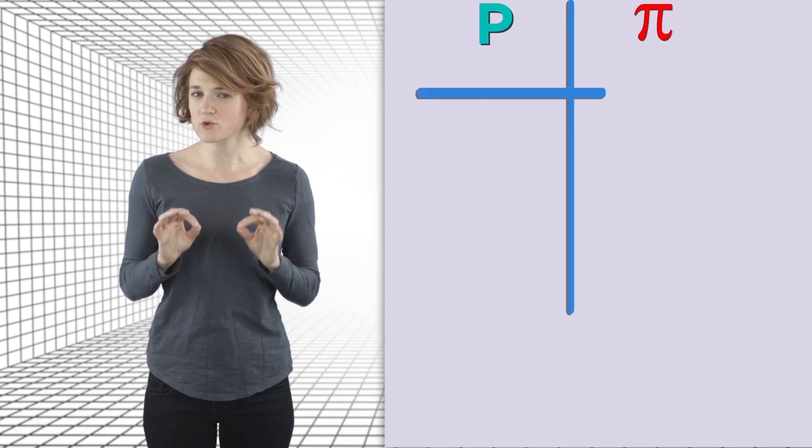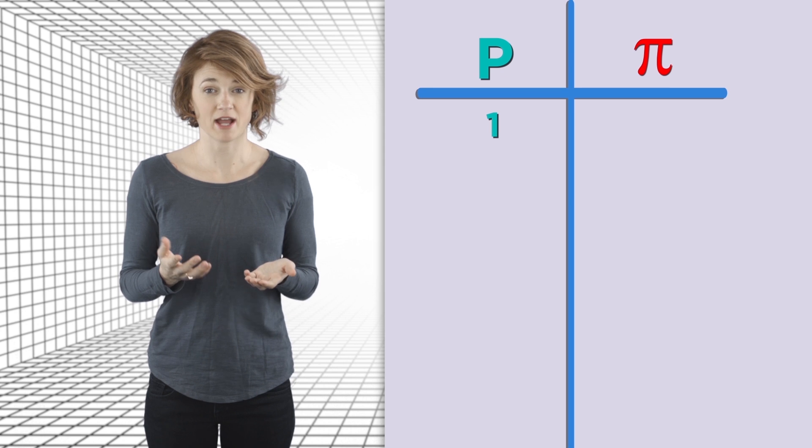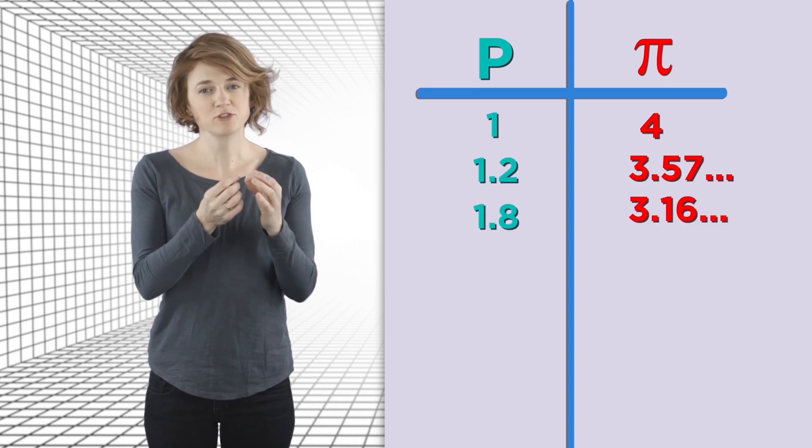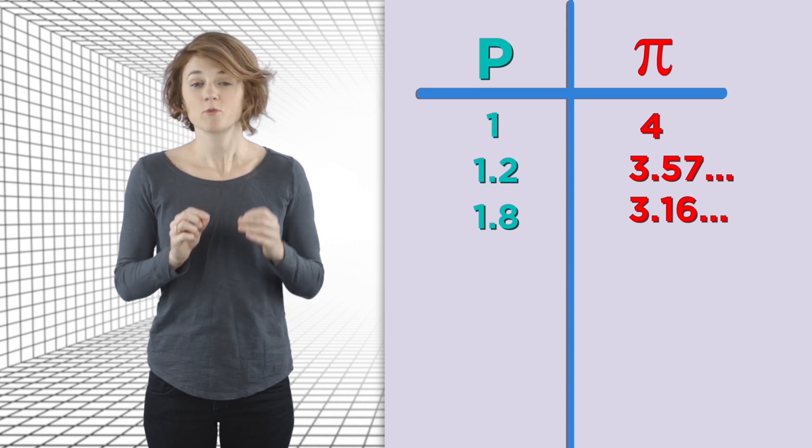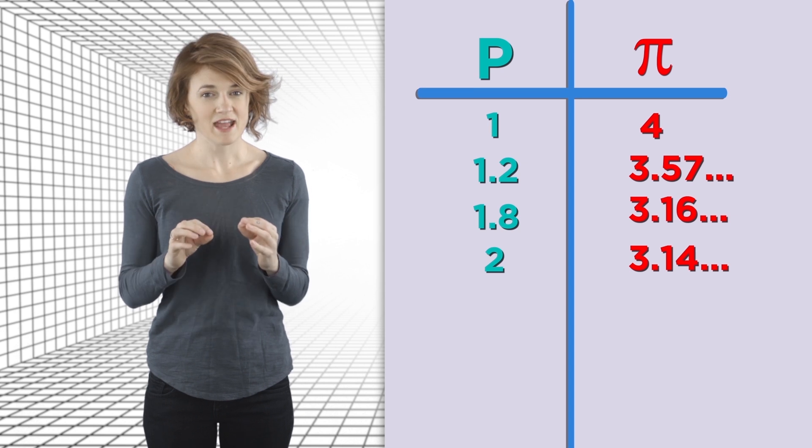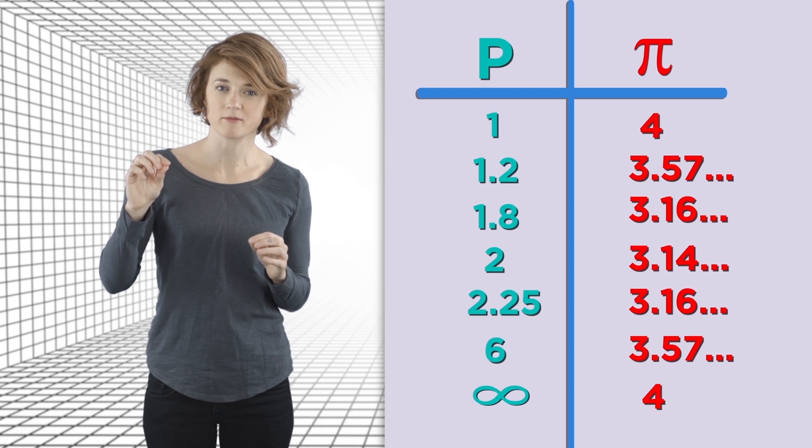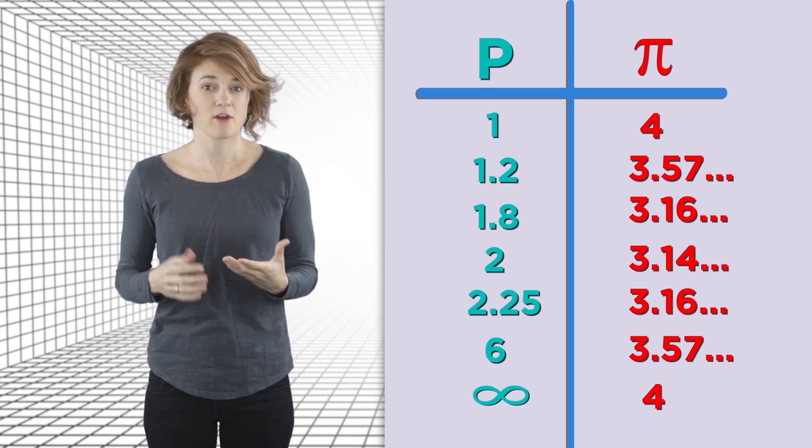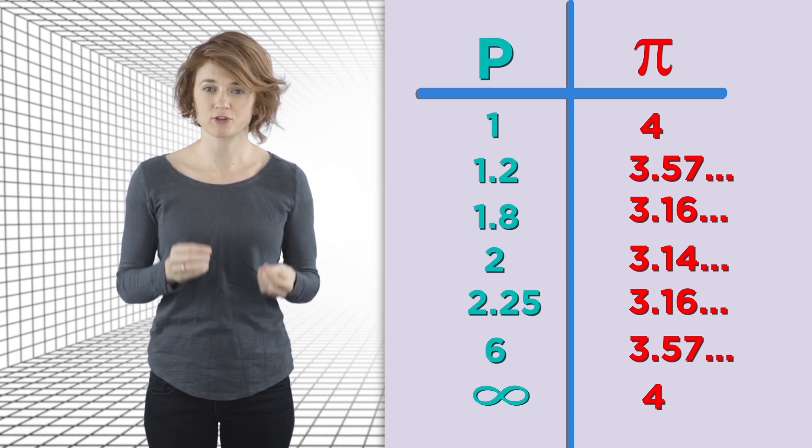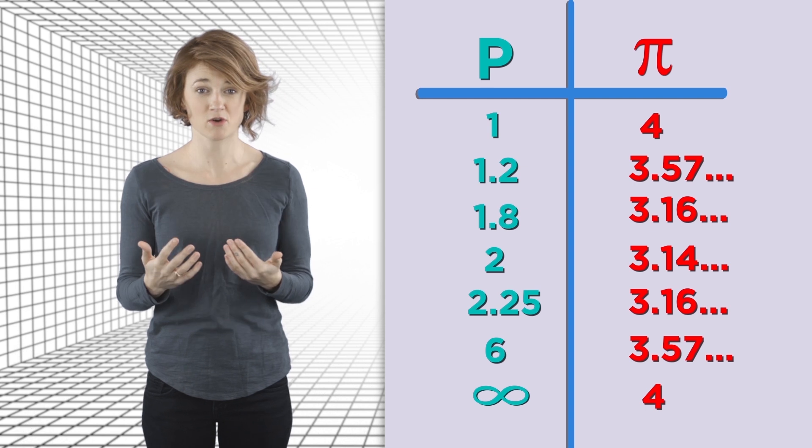But here's the amazingly cool part about how that changes pi. When p equals 1, the value of pi is 4. Then, as p gets a little bigger, closer to 2, the value of pi gets smaller. When p equals 2, pi is the normal 3.14. Then, as p keeps getting bigger, the value of pi goes back up toward 4. So among the Lp metrics, 4 is the maximum value of the ratio of a circle's circumference to diameter. And 3.14159 and so on is the minimum.